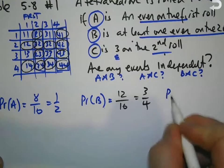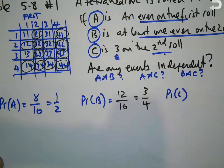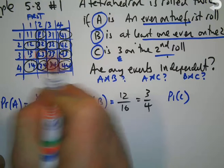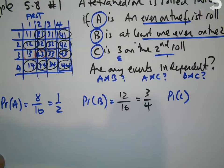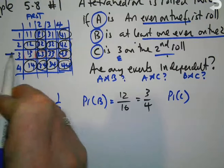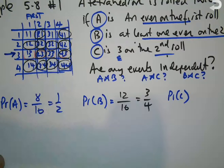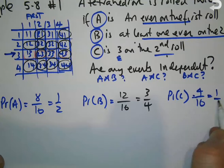Probability of C, where C is a three on the second roll: a three on the second roll gives outcomes (1,3), (2,3), (3,3), (4,3) — those four outcomes along that row all have a three on the second roll. That's 4 out of 16, which equals one quarter.